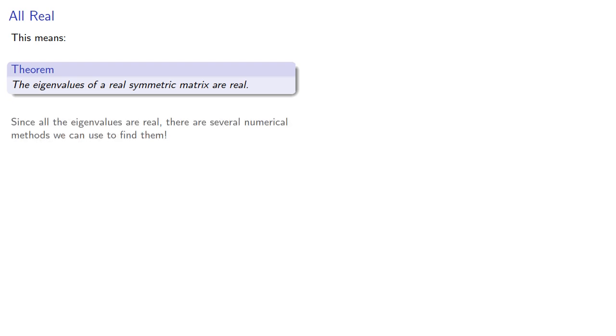Well, the only numbers that are their own conjugates are real numbers, and so this means the eigenvalues of a real symmetric matrix are real. And usefully, since all the eigenvalues are real, there are several numerical methods we can use to find them. But wait, there's more.